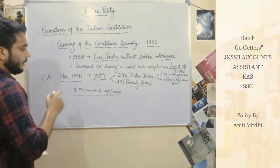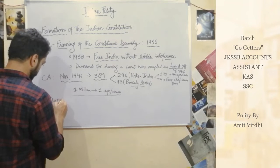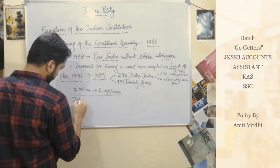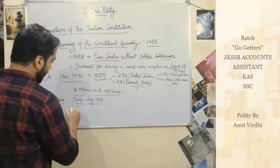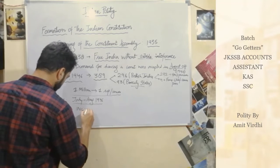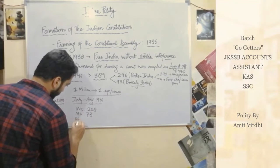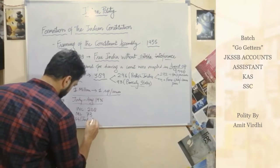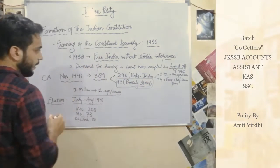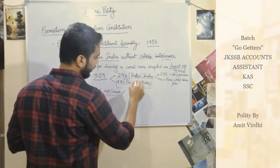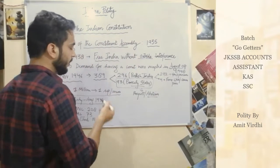Elections were held in July to August 1946. The Indian National Congress won 208 seats, the Muslim League won 73 seats, and the remaining small groups or individual representatives numbered 15. The 93 representatives from the princely states basically boycotted and abstained from voting — they did not vote.